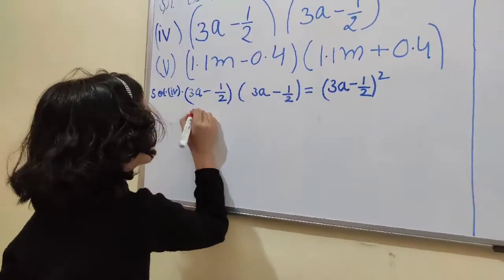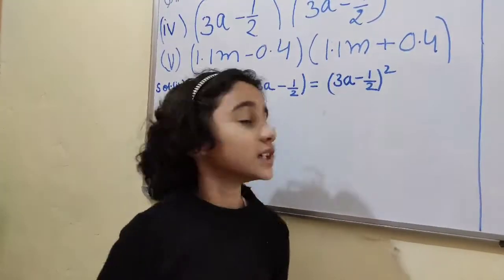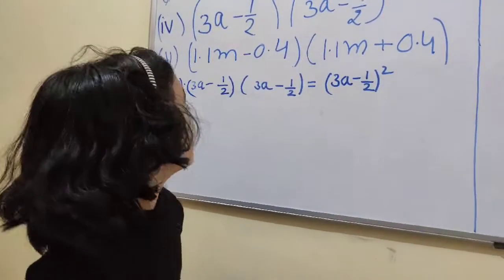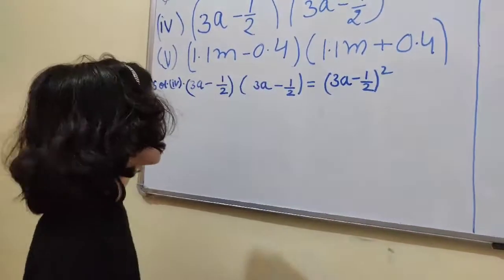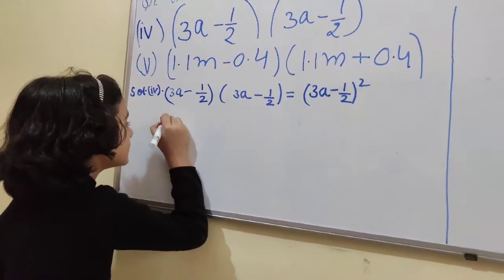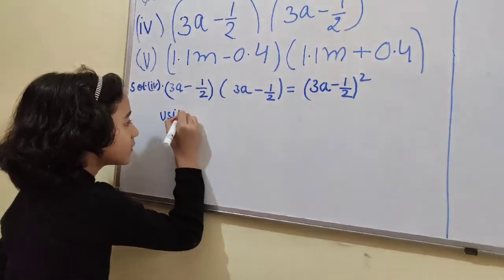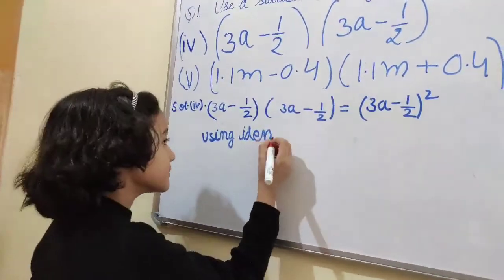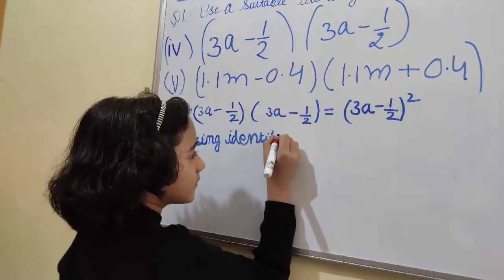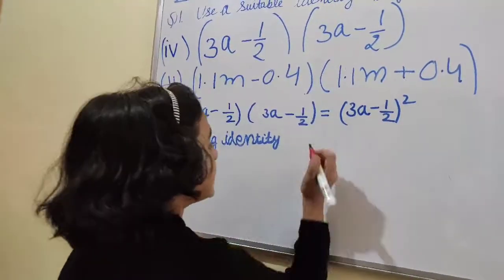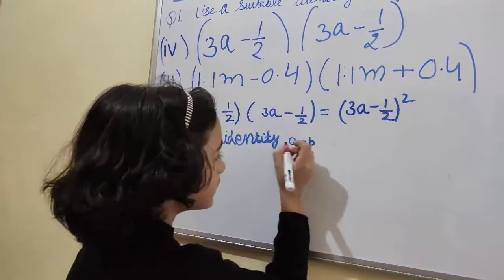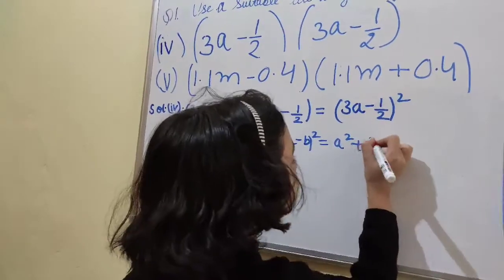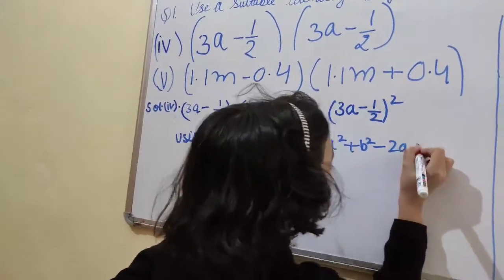Using identity, now we are going to use identity (a - b) whole square, which is equal to a² + b² - 2ab.